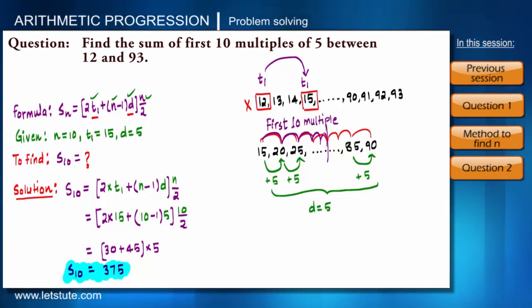That was a slight difference in this question. If like the previous question I would ask you to find total multiples of 5 lying between 12 and 93, how do you calculate? So you have two methods to calculate that.